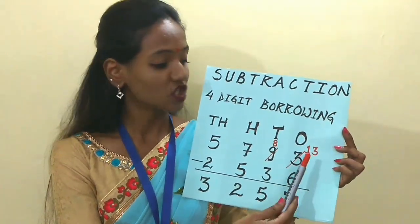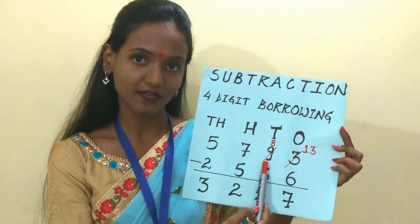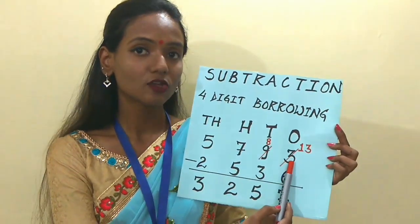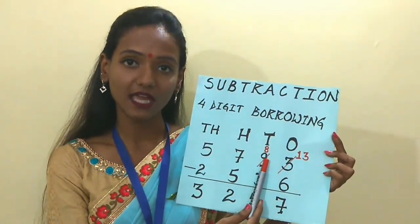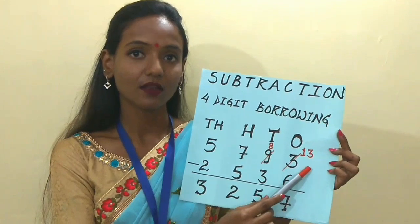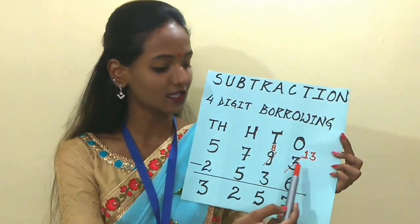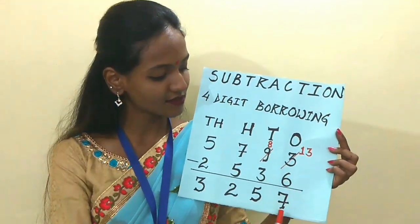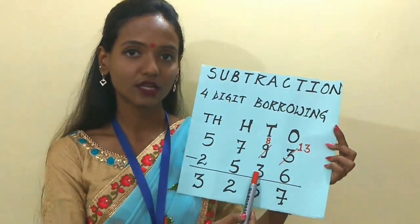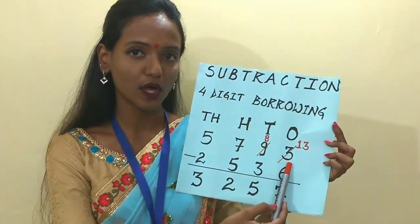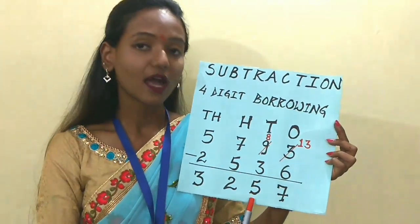How do we borrow children? We shall borrow 1 ten from the next place, that is from the 10s place. So 9 will give 10 to the 1s place. So 9 becomes 8, and 3 becomes 13. Now we can clearly see 13 is bigger than 6, so we can subtract 13 minus 6 and get the answer 7. Then 8 minus 3: since the 9 in the 10s place had borrowed 1 ten to the 1s place, 9 becomes 8. So 8 minus 3 equals 5.